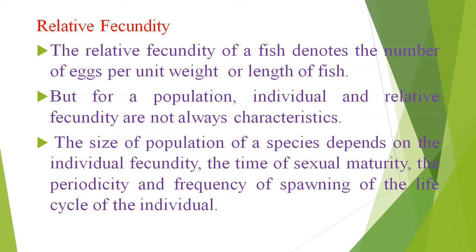When we talk about relative fertility, the relative fertility of a fish denotes the number of eggs per unit weight or length of a fish. For a population, individual and relative fertility are not always characteristics. The size of population of a species depends on the individual fertility, the time of sexual maturity, the periodicity and frequency of spawning, and the life cycle of the individual.